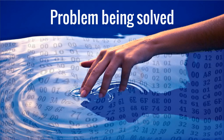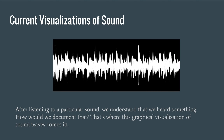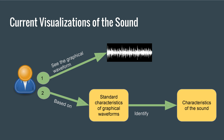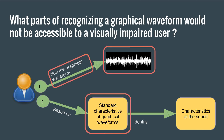So what is the problem that this paper is trying to address? Any sound that we hear can be visualized graphically. How do we interpret this sound wave? Sound receiving sensors identify certain characteristics of the sound which are then converted to a graphical representation based on the standard characteristics of graphical waveforms. A sighted user can understand a graphical waveform of a sound by looking at it and identifying its characteristics, whereas a visually impaired user can neither look at the graphical waveform nor are there any standard characteristics of graphical waveforms defined for visually impaired users.